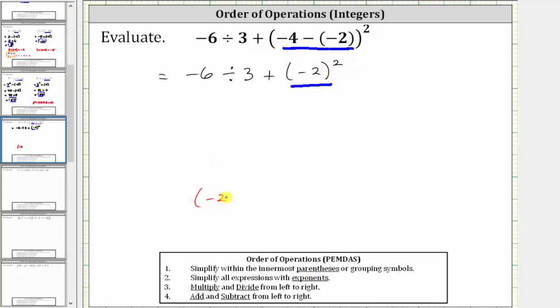Well, the square of negative two is equal to two factors of negative two, or negative two times negative two, which is equal to positive four.